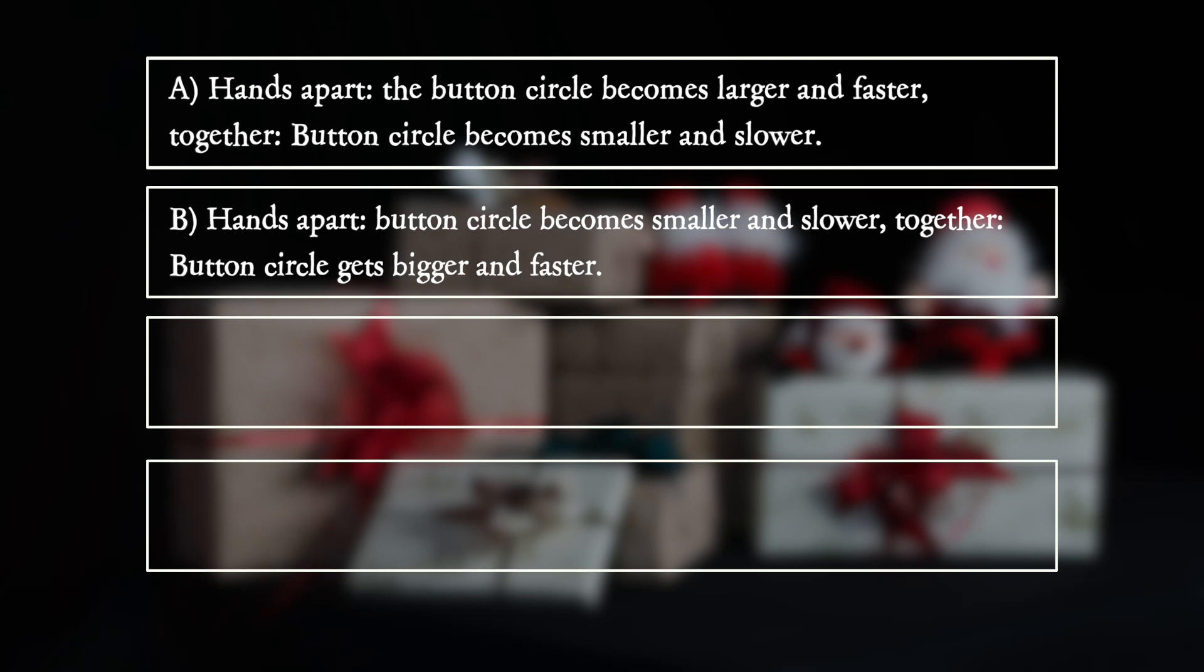B. Hands apart: button circle becomes smaller and slower. Together: button circle gets bigger and faster.